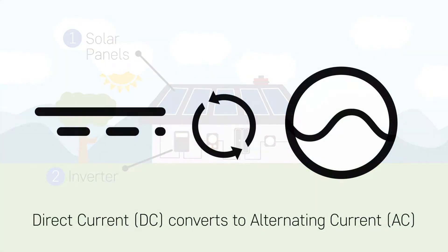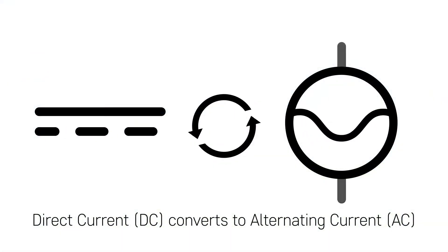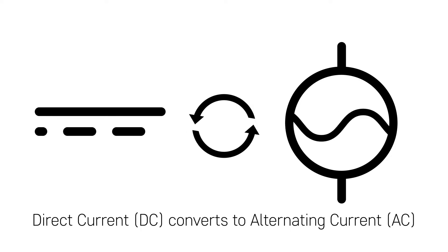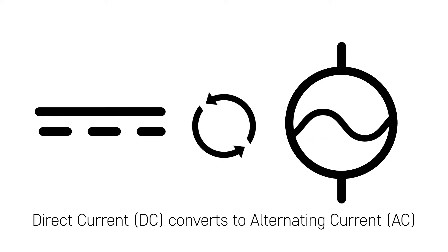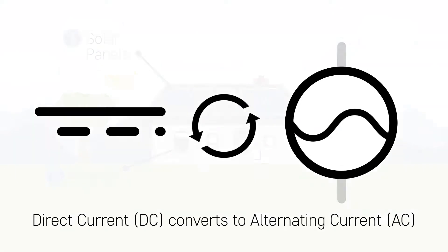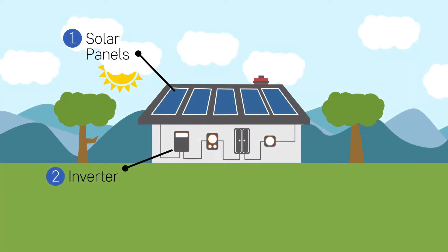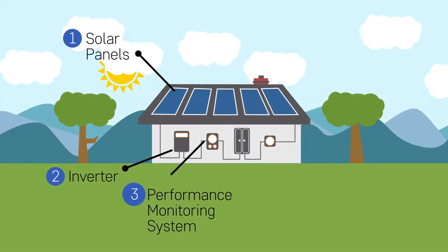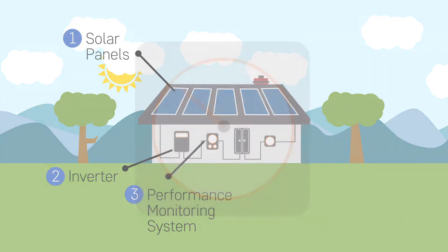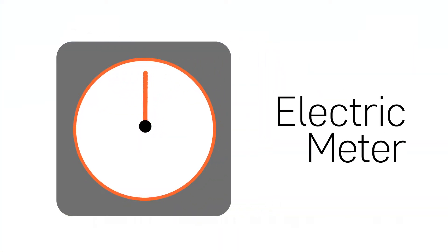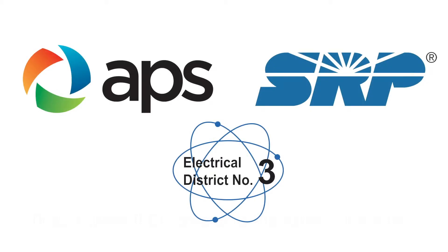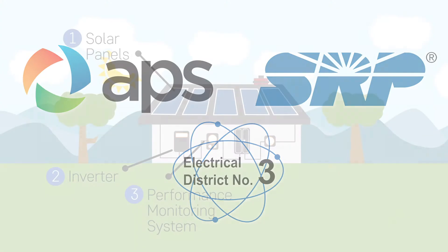That inverter will then convert that energy from DC, or direct current, into alternating current — which is the same electricity you use through outlets throughout your house. From there it'll be measured by number three, the performance monitoring system, which is just another fancy name for an electric meter — and that is provided by your local energy company that wants to see how much electricity your solar panels are generating for your home.